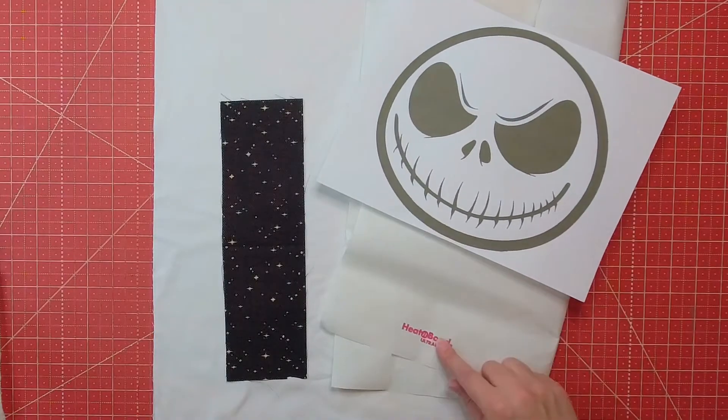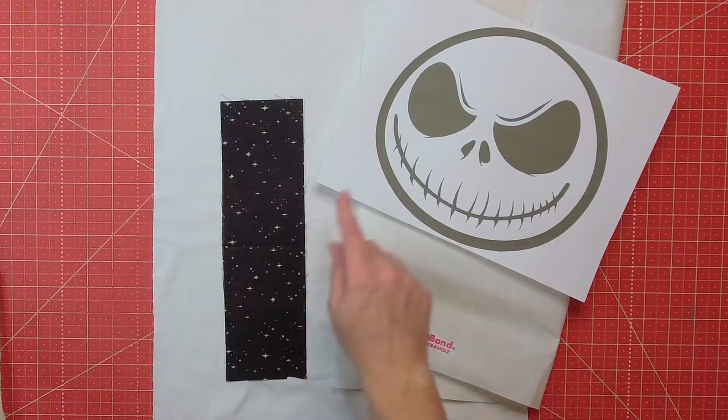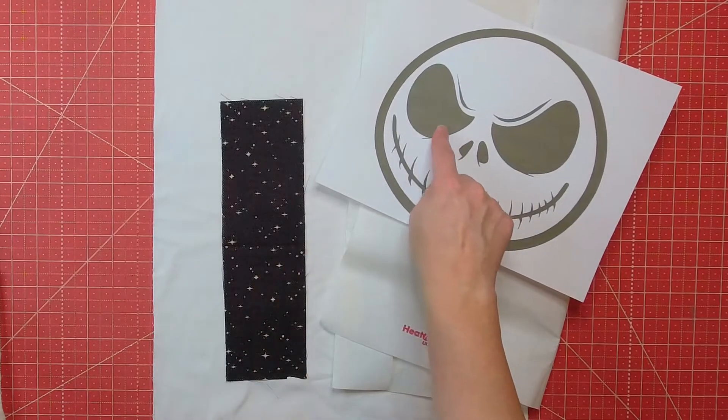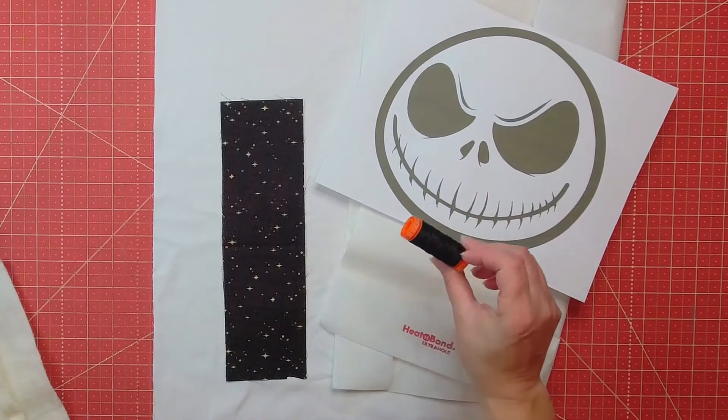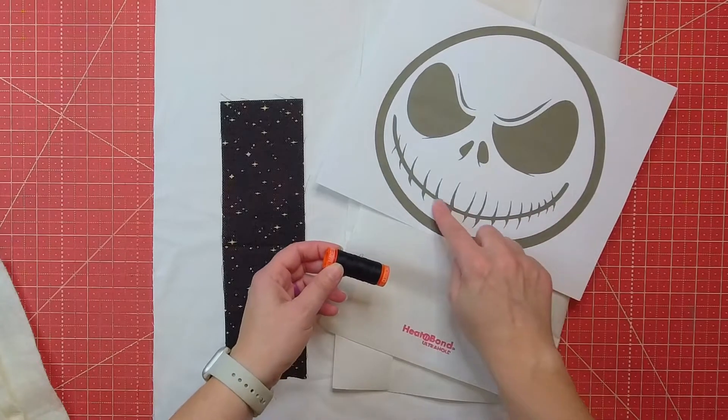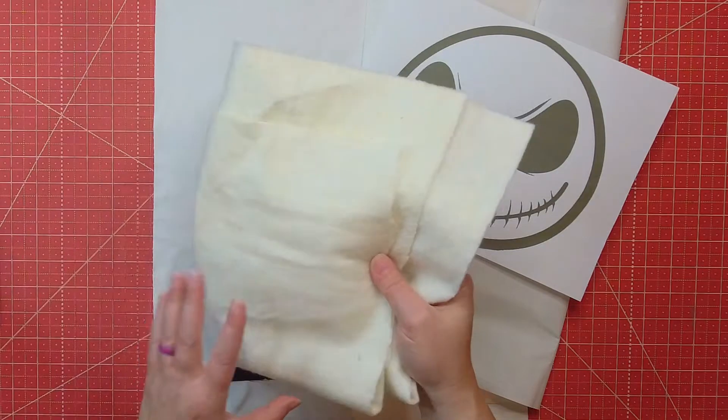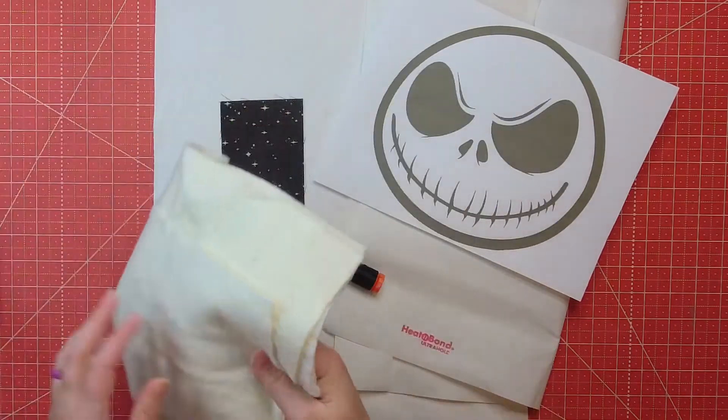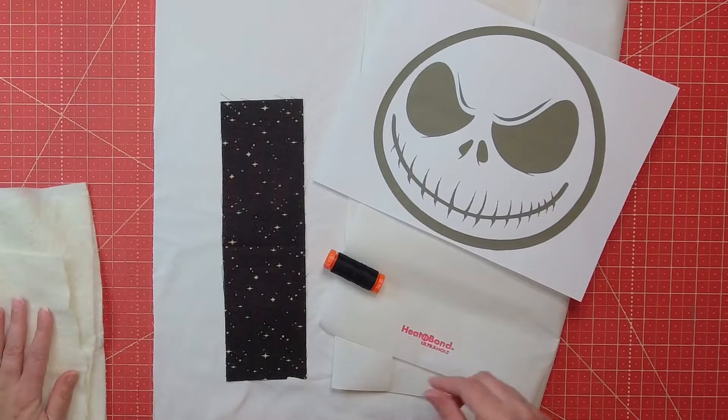You'll need a printout of a Jack Skellington design, some heat and bond. I like the ultra hold, some black fabric for the eyes and nose, and then you'll need some black thread for the mouth because I just used my sewing machine to stitch that in place, and then you'll need some scrap piece of batting that is big enough for your pillow, the round area that you want.